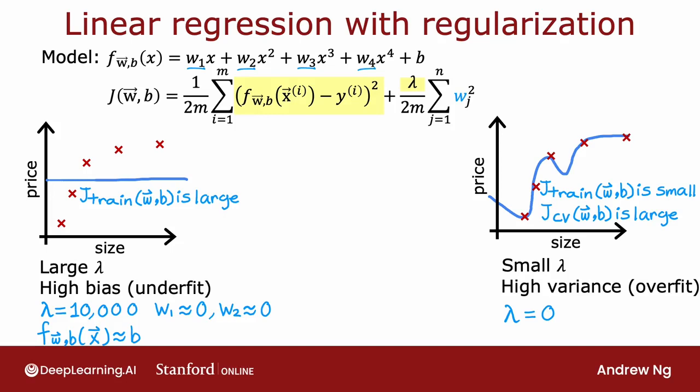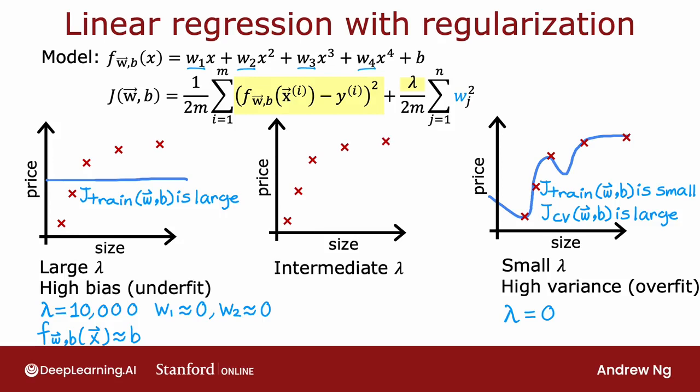With some intermediate value of lambda — not as large as 10,000 but not as small as zero — you hopefully get a model that fits the data well, with both small jtrain and small jcv.